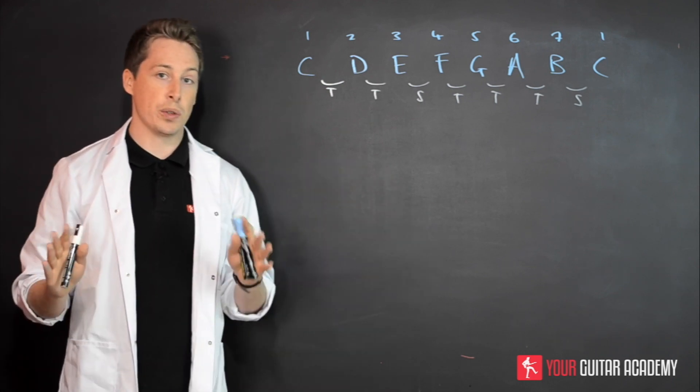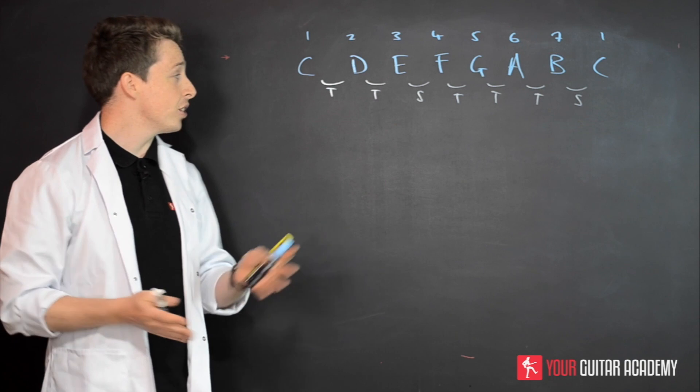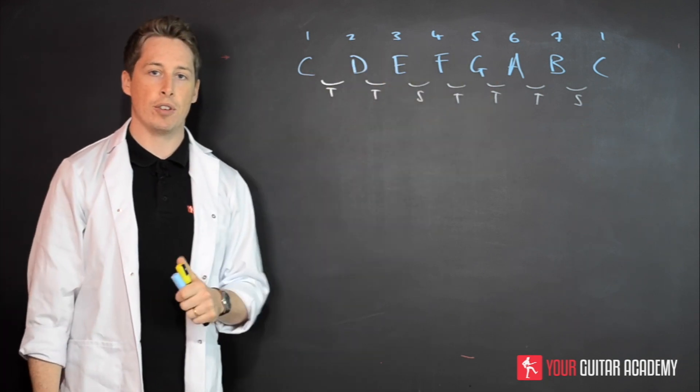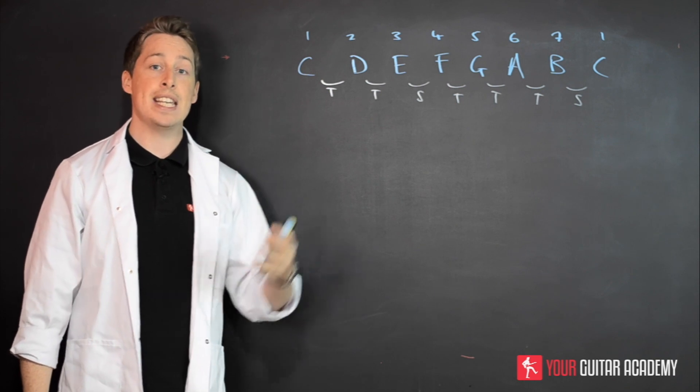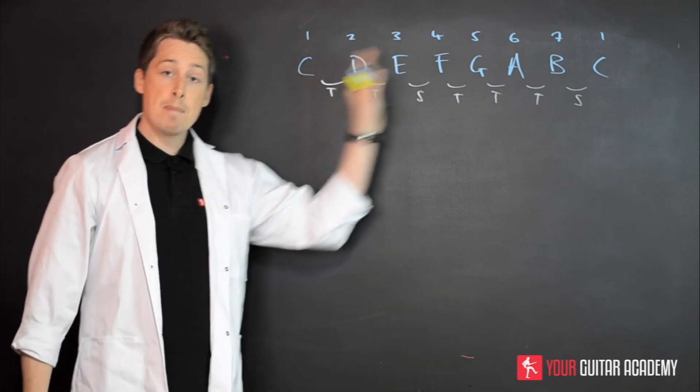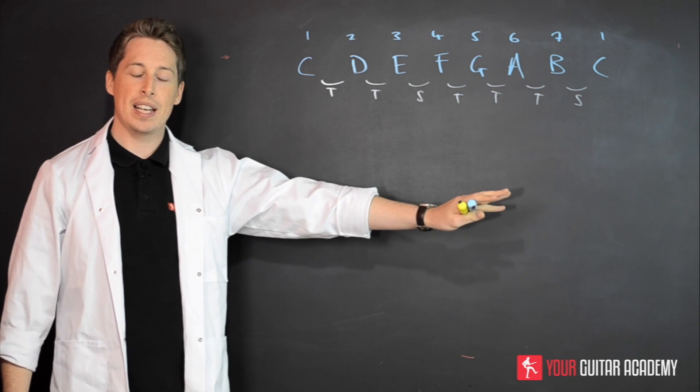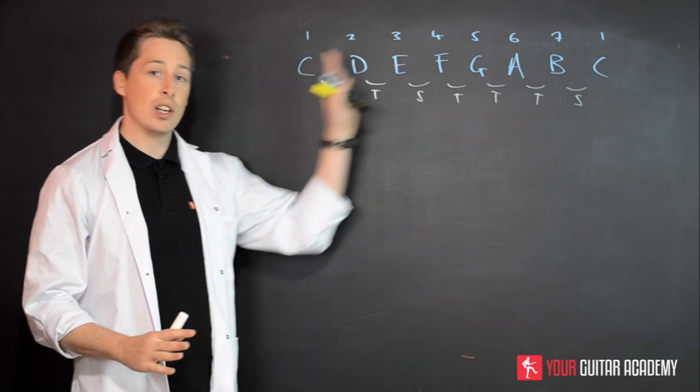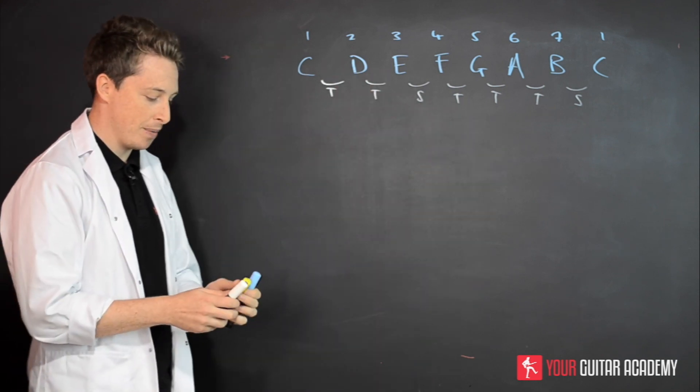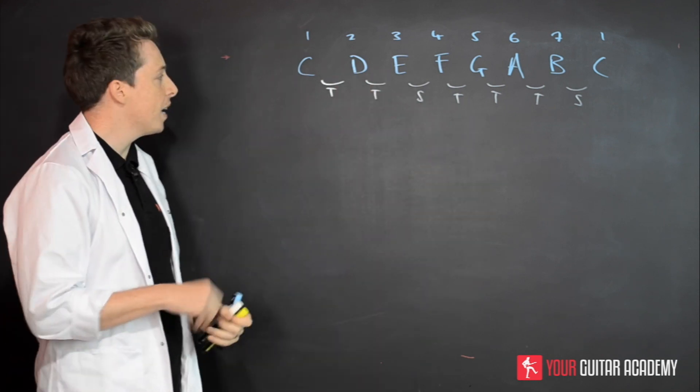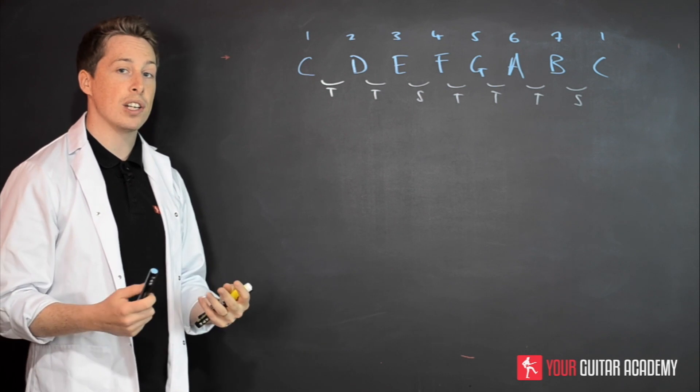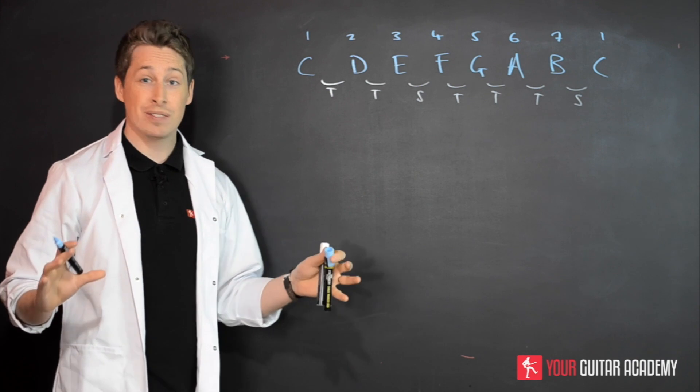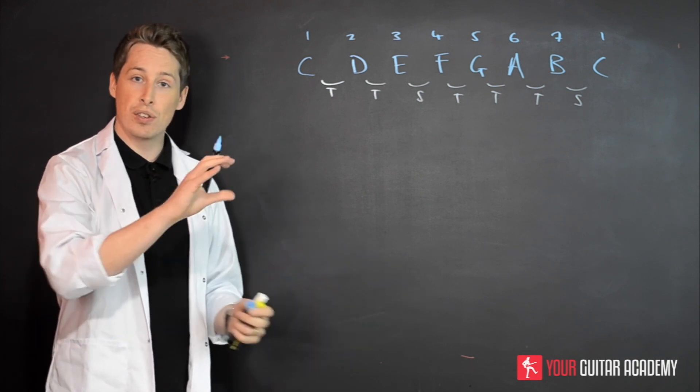Whenever we're looking at chord construction, our first task is we must be able to get, or create, or remember, however you do it, the major scale you're looking for. So if you're looking to create a D major chord, you need to get the D major scale up here. So we'll go through a few examples, but for now we're looking at C chords, and therefore we've got the C major scale up here.